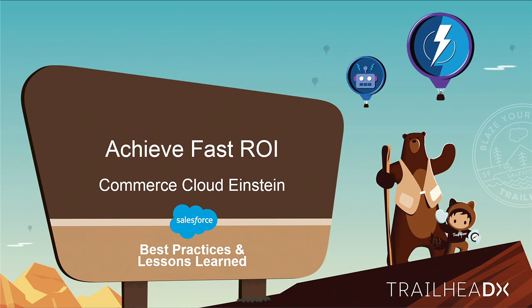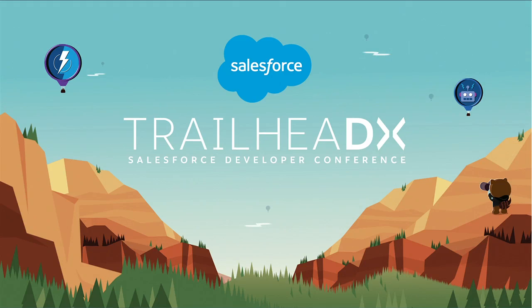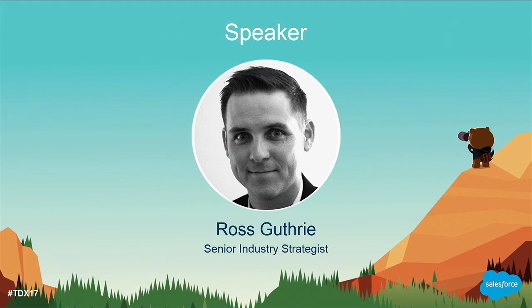Welcome everyone. Today we're going to be talking about the short path, or the happy path, to implementing Einstein product recommendations on Commerce Cloud. A little bit about myself — my name is Ross Guthrie. I'm an industry strategist with Commerce Cloud. I've been with the company for about four years. I spend most of my time bridging the gap that sometimes exists between the business and the technology.